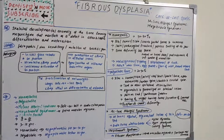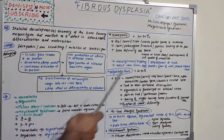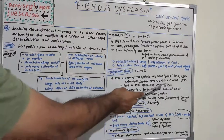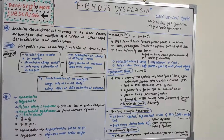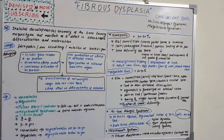The polyostotic form accounts for the remaining 20–30% of cases. It affects more than one bone — femur, tibia, pelvis, ribs, skull, facial bones, upper extremities, lumbar spine, clavicle, and cervical spine. Distribution is typically unilateral, though bilateral (asymmetric) cases occur. Clinical features include pain, spontaneous fractures, bowing of weight-bearing long bones, curvature of the femoral neck, and the characteristic shepherd's crook deformity.